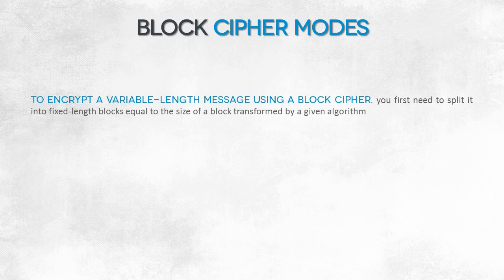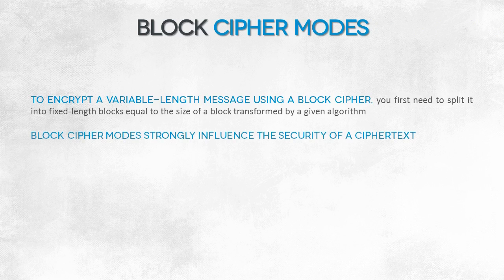Let's now examine block cipher modes. As you now know, you have to split a variable-length plaintext into fixed-length blocks. The length is determined by the algorithm that you want to use. The way in which blocks are split is critical for the security of the entire ciphertext. We're moving into cryptographic systems now. Even a very secure algorithm, if it's ill-implemented, causes the ciphertext to be extremely vulnerable. We'll prove it in a moment.